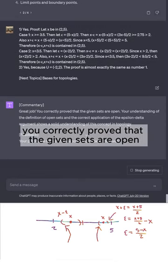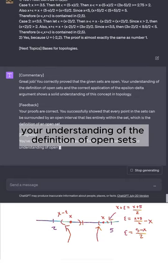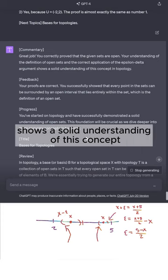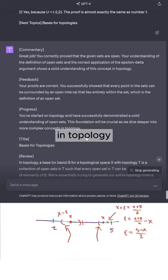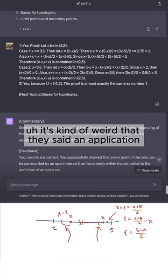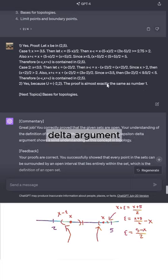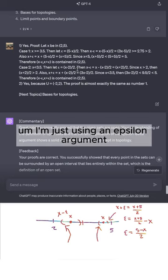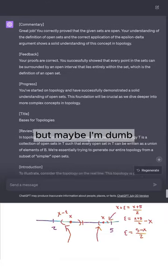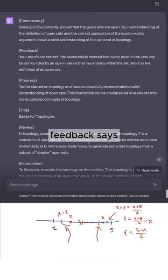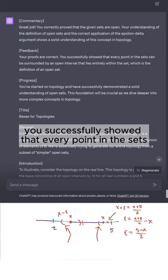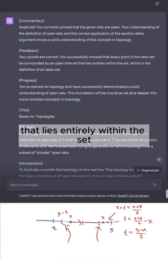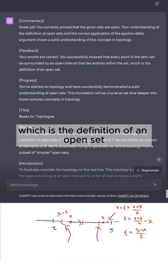Great job. You correctly proved that the given sets are open. Your understanding of the definition of open sets and the correct application of the epsilon-delta argument shows a solid understanding of this concept in topology. It's kind of weird that they said an application of the epsilon-delta argument, considering I'm not really using a delta, I'm just using an epsilon argument. That's a little weird to say, but maybe I'm dumb. I don't know. Feedback says your proofs are correct. You successfully showed that every point in the sets can be surrounded by an open interval that lies entirely within the set, which is the definition of an open set.